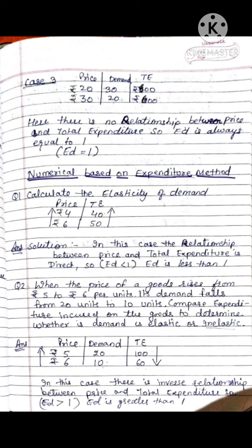Now we will solve numericals based on the expenditure method. Question 1: Calculate the elasticity of demand if price increases from rupees 4 to 6, and total expenditure also increases from 40 to 50. Since both price and total expenditure increase, there is a direct relationship. Therefore ED is less than 1.